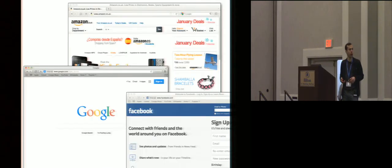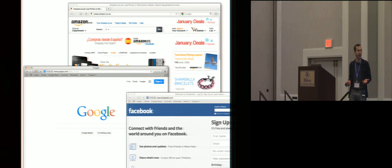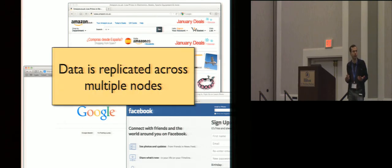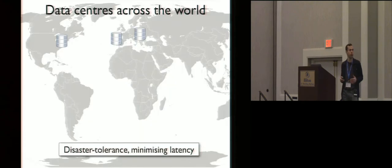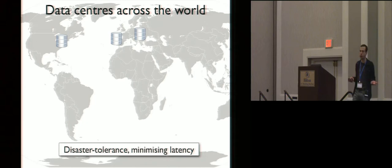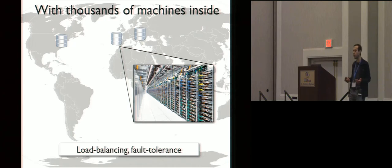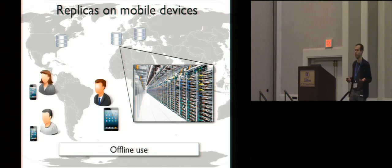I'm going to be talking about large-scale distributed systems — things like Google, Facebook, Amazon. One way in which these systems achieve scale is they replicate data across multiple nodes. They can store data in data centers located across the world, to tolerate disasters and minimize latency by allowing a user to access the closest data center. Within every data center, data is spread across thousands of machines to balance load and for fault tolerance, because these machines fail all the time. Finally, users may have replicas on their mobile devices to support offline use.